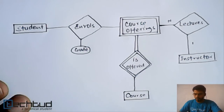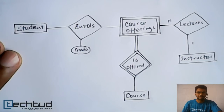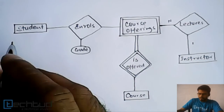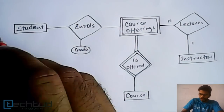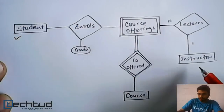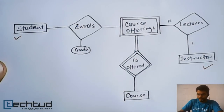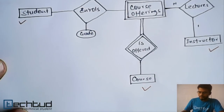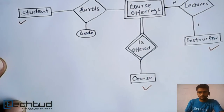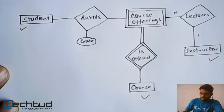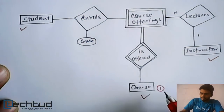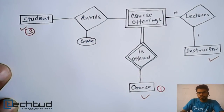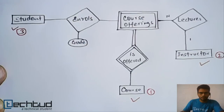Let's start counting the number of tables. First, let's count the strong entities. Instructor is a strong entity and Course is a strong entity — we also have one more strong entity. We will have one table for each strong entity, giving us three tables total for our strong entities.